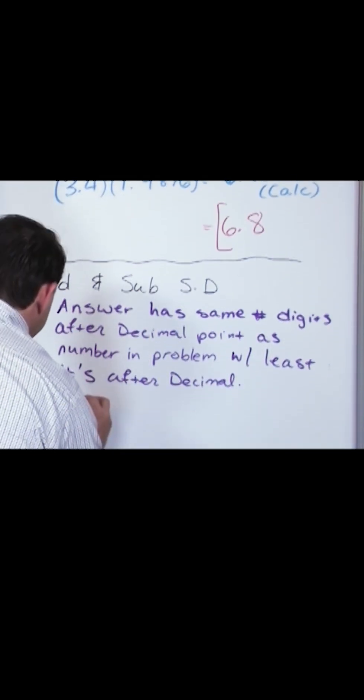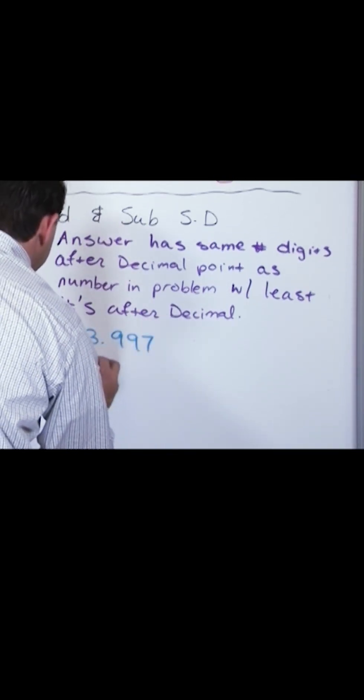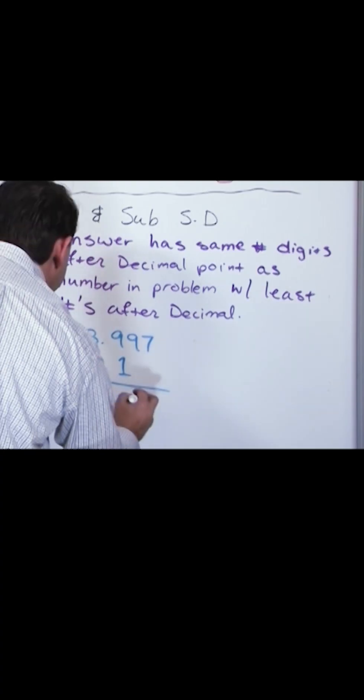What if I have 23.997 and I'm going to subtract 18.1, 5.897. This is from the calculator.